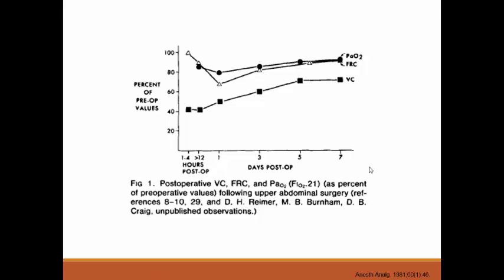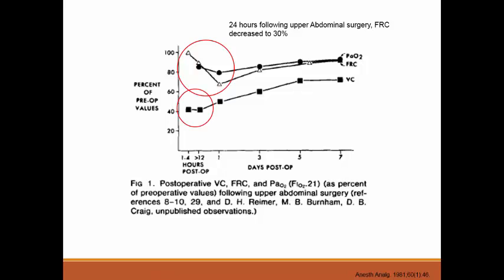The RIMER study from the 1970s is where the conclusion about decreased FRC and vital capacity comes from. For 24 hours following upper abdominal surgery, FRC decreased by 30% and vital capacity decreased by 60%. Notably, there was a trend toward normalization by day seven, when FRC and vital capacity tended to return to normal preoperative levels.